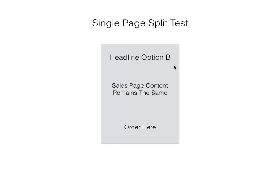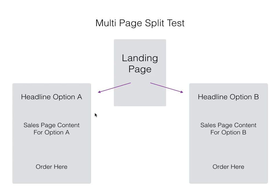There is another way to test and this is multi-page testing, and it looks like this. In this situation we actually send all of the traffic to a landing page. The landing page basically processes some code to decide whether to send people to your option A or option B. In this case option A and option B are completely different web pages — for example, option A is a traditional sales letter and option B is a video sales letter.